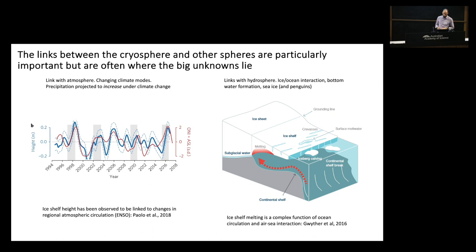I've already touched on the links with the hydrosphere — this ice-ocean interaction and melting — but I'll also mention that the cryosphere is critical for bottom water formation and the global overturning circulation. Antarctica forms the return leg of that, and a recent paper suggested there's a potential regime change in the global meridional overturning circulation, which would be an Earth system scale impact.